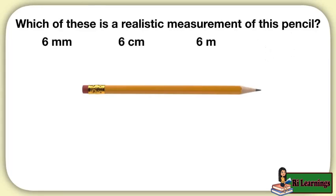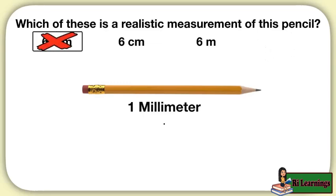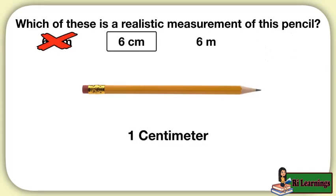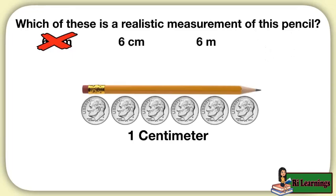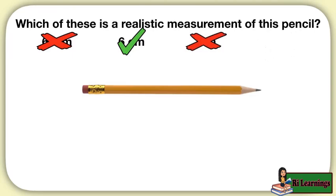Here's another problem to practice with. Which of these is a realistic measurement of this pencil? Six millimeters, six centimeters, six meters. Let's start with six millimeters. Remember that one millimeter is really tiny like this tiny dot right here. Does that seem like six millimeters would be the length of a pencil? No, that's way too small. Well, what about six centimeters? Remember, one centimeter is about the size of a dime. Does six centimeters seem like the right size for a pencil? Yes, six centimeters is about the length of the pencil. That's a realistic measurement.